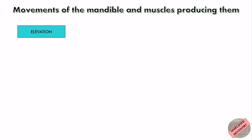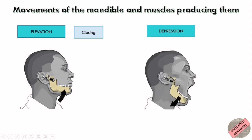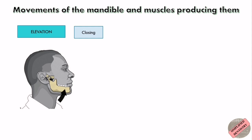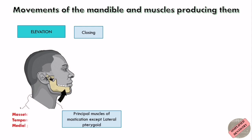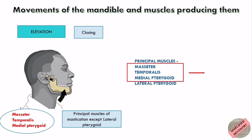First, let's look at elevation and depression of the mandible. Elevation leads to closing of the mouth and depression leads to opening of the mouth. All principal muscles of mastication except lateral pterygoid are involved in elevation — that is masseter, temporalis, and medial pterygoid.